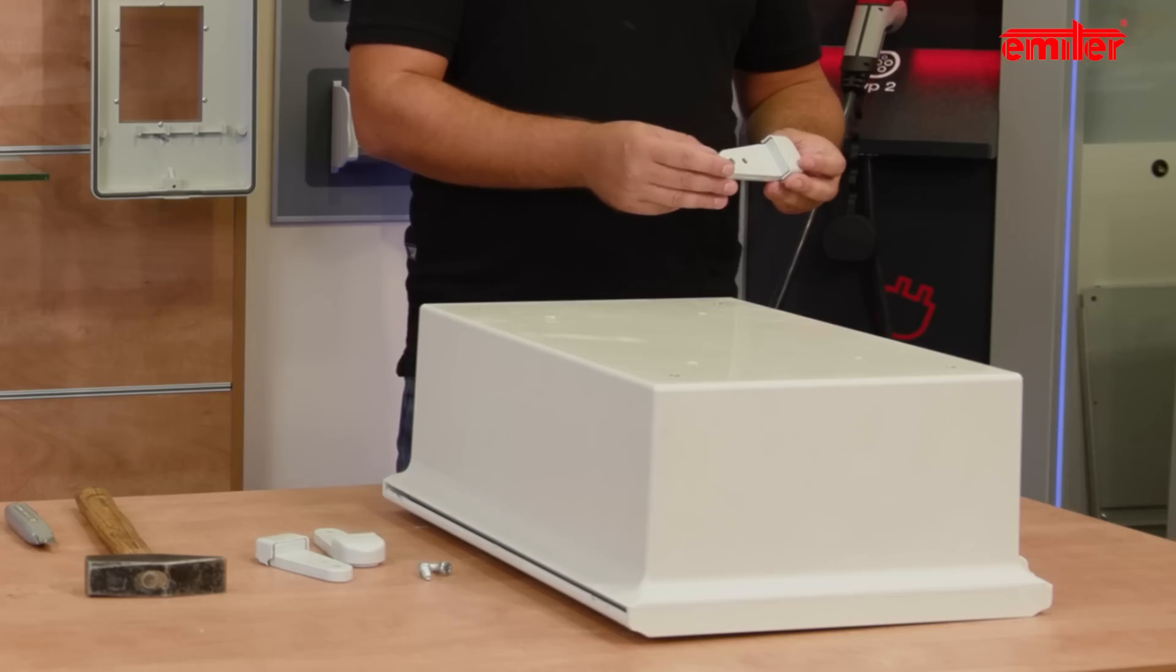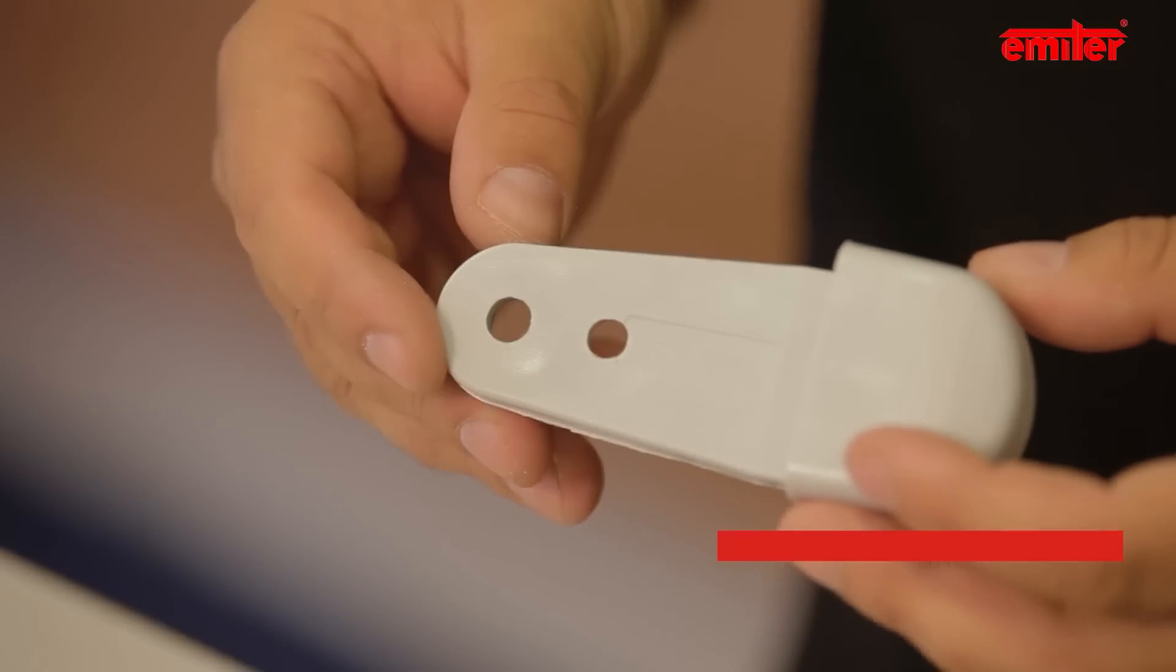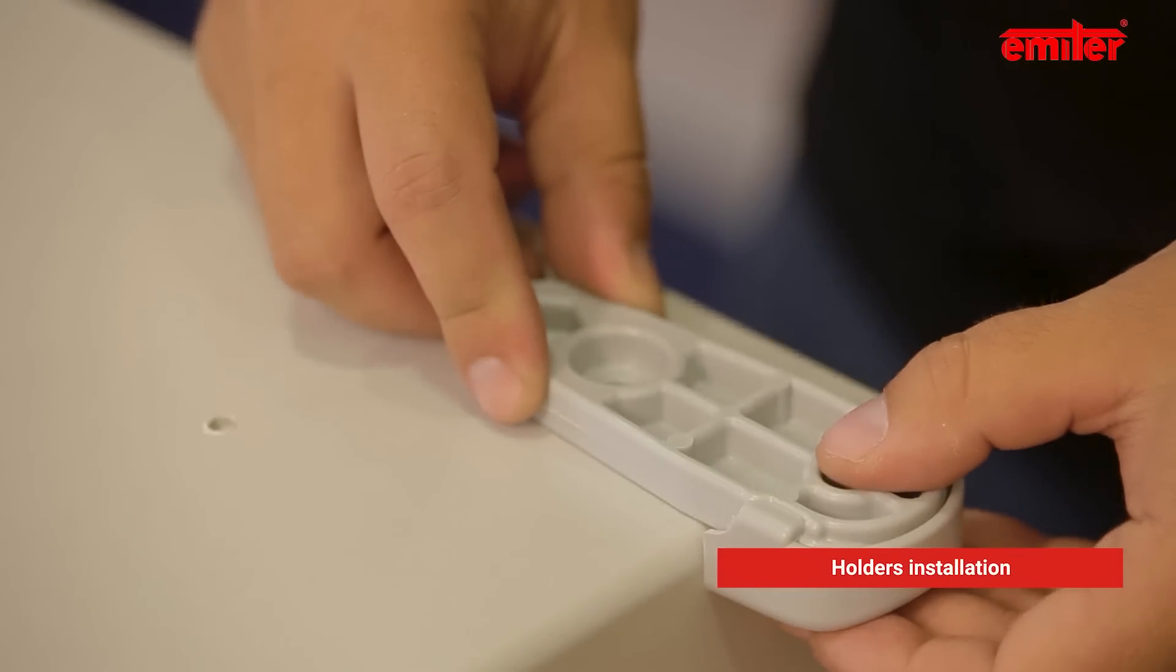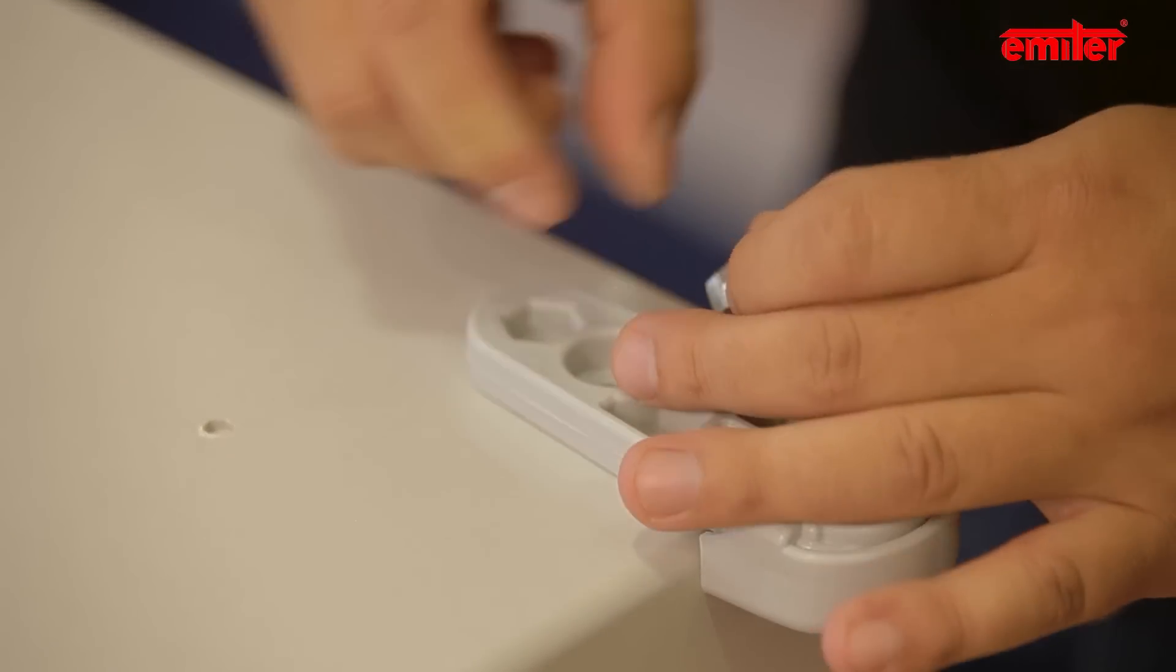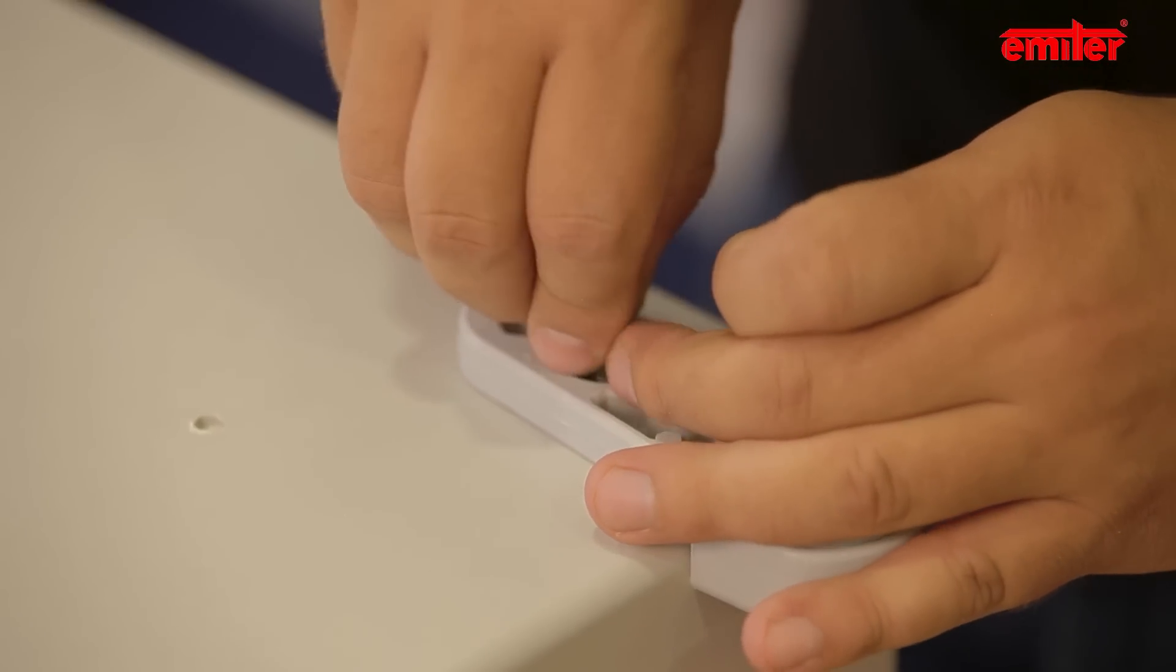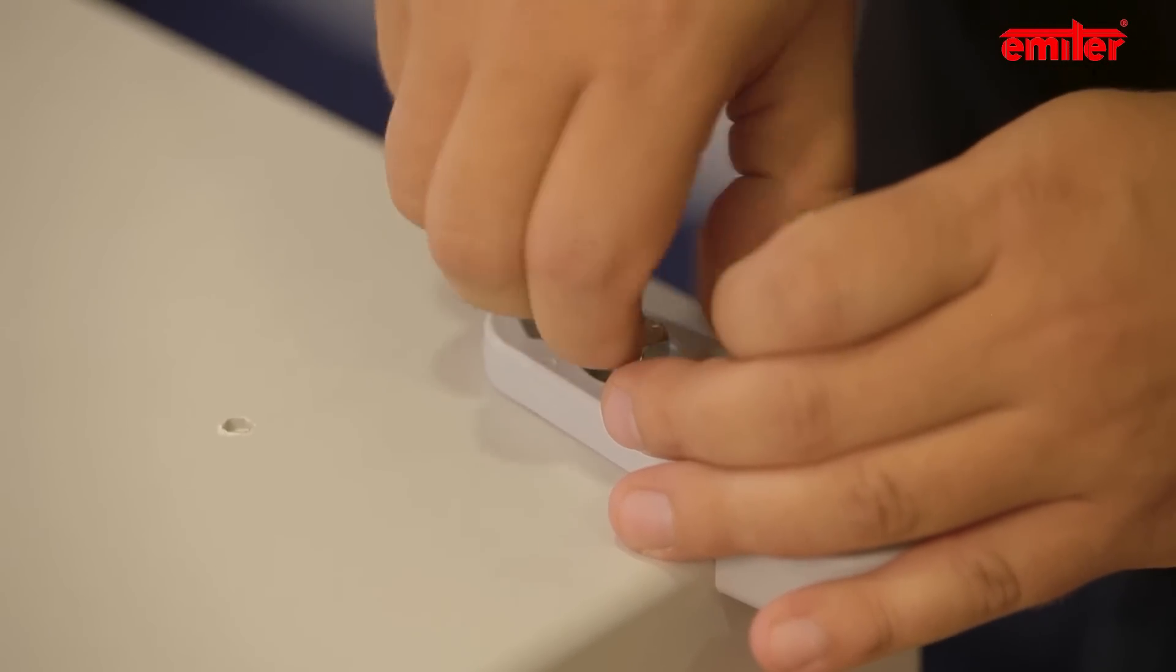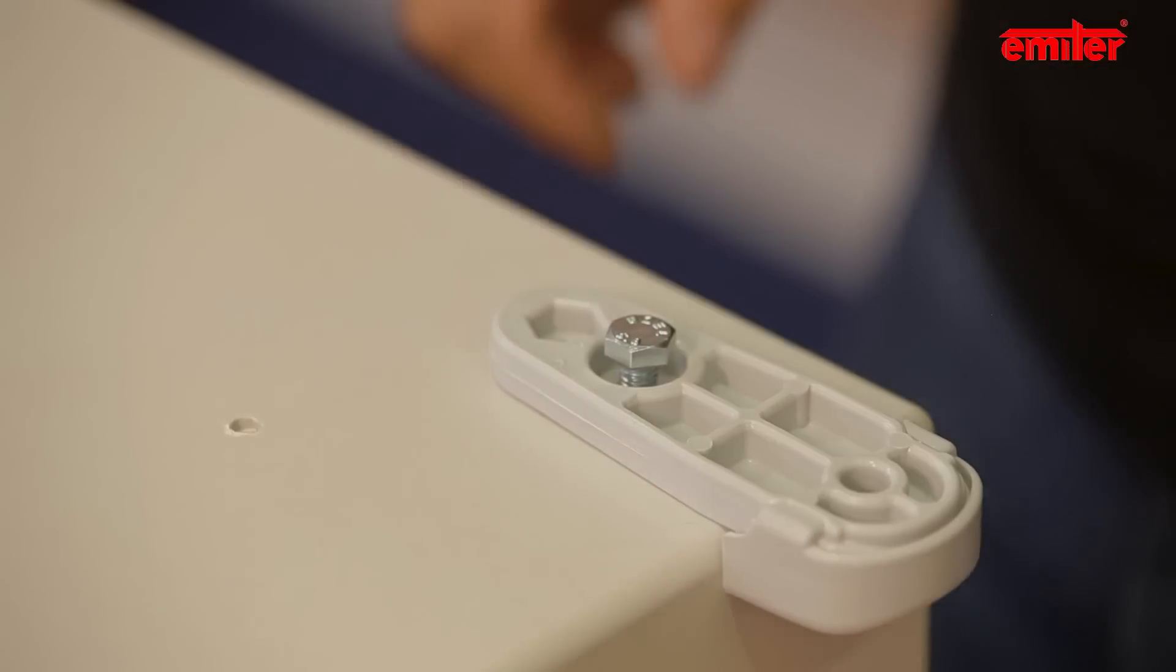Sleeves are installed. Now we can mount the holders. For this purpose, we use four bolts M8x16, which are part of the set. We attach the holder in the way its retaining surface adjoins the side wall of the enclosure, and the holes match with the axis of the previously installed sleeve.